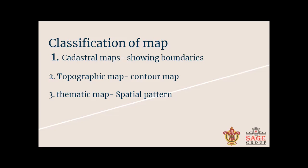A topographic map is also called a contour map, topo map, or topo sheet. It shows land contours using contour lines, as well as water bodies, forest cover, built-up areas, rail, and roadways — all these contents come under the topographic map. The last one is the thematic map — a theme-based map. Thematic means it always shows some spatial pattern, like a relief map, geographical map, weather map, climatic map, vegetation map, cultural map, or political map. It always follows the spatial pattern according to the area.